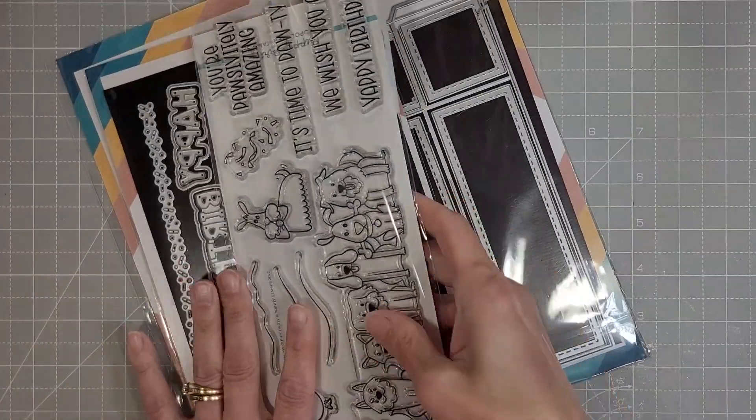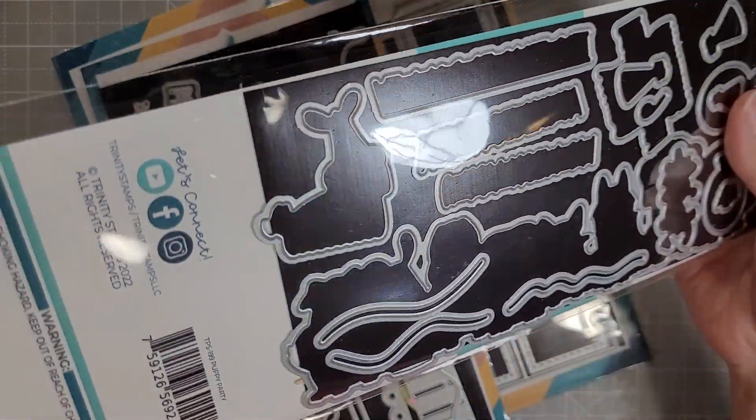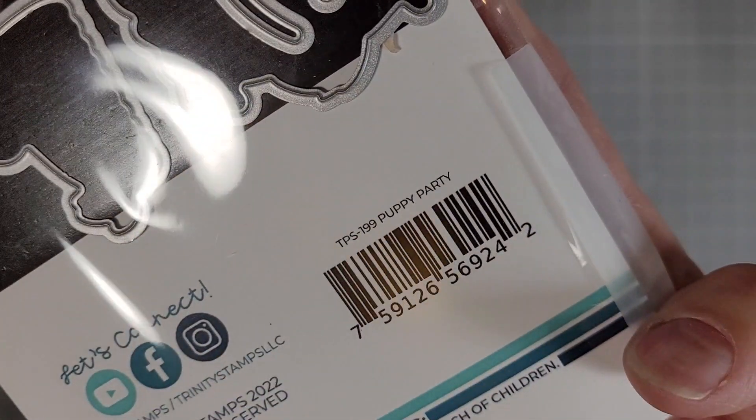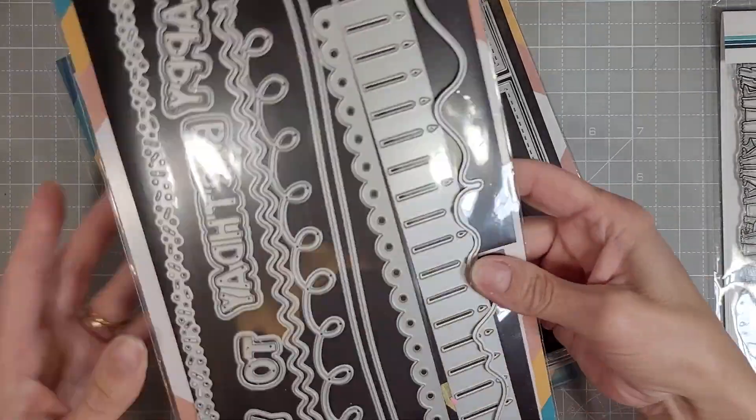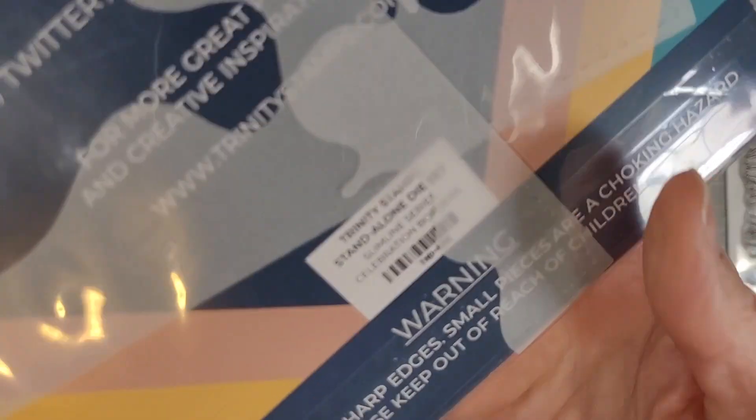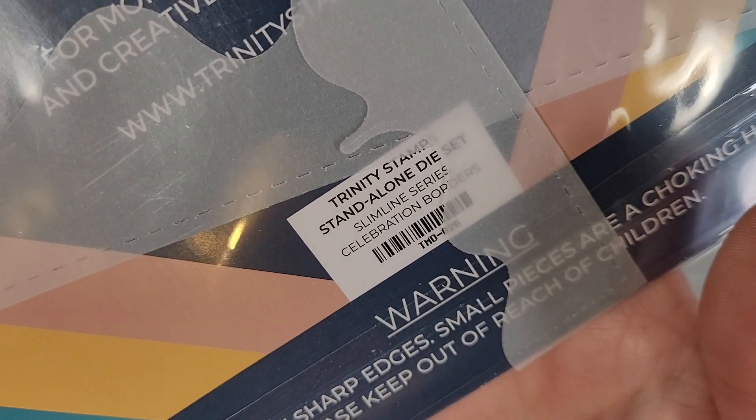We're going to use several products, some that are new, some that are not. This one is the Puppy Party Slimline Stamp Set and the coordinating dies, and then we have this other Slimline set called the Celebration Borders Set.